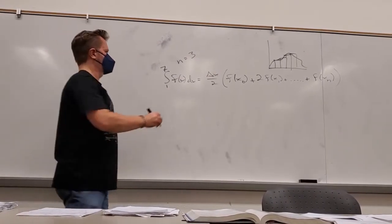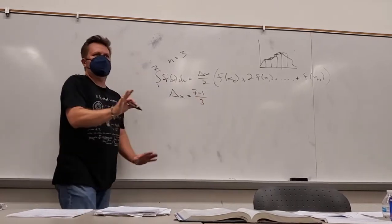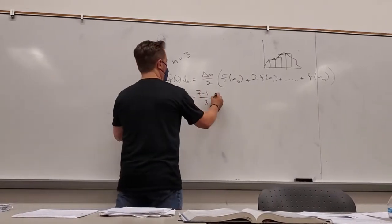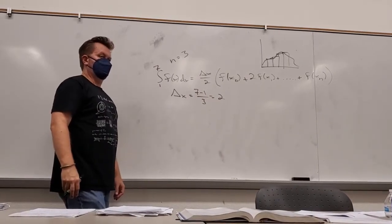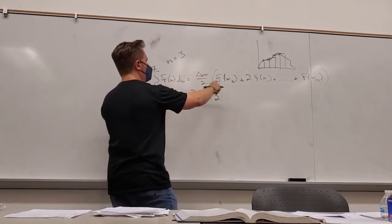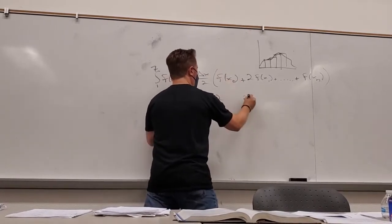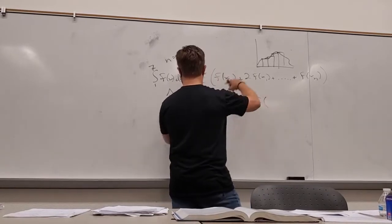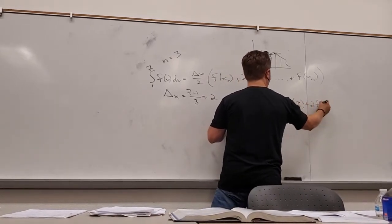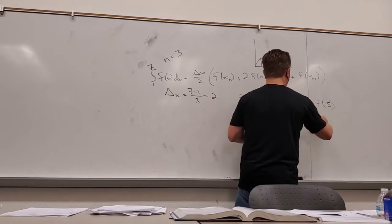So if I'm going from 1 to 7 using 3 trapezoids, what would the width be? b minus a over n: 7 minus 1 over 3 — so each one is 2. x-zero would be 1, x-one would be 3, x-two would be 5. You end up with delta-x over 2 and a series of f-values.